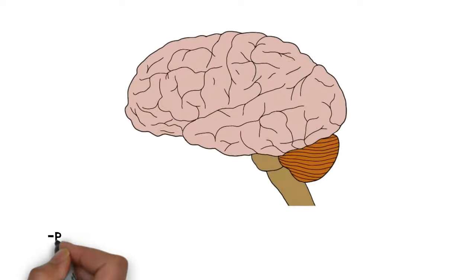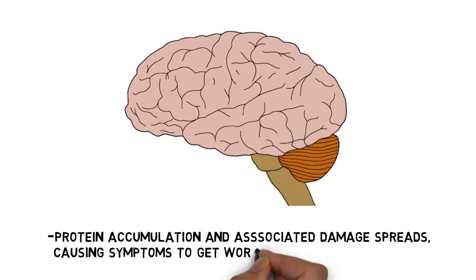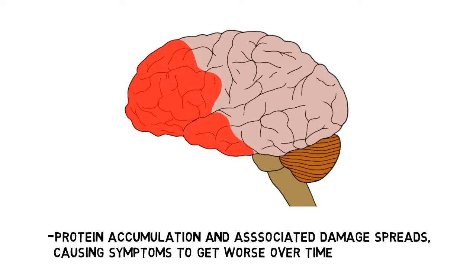The protein accumulation and associated damage spreads, causing the symptoms of FTD to get progressively worse over time. While initially a patient may display symptoms linked to just one of the FTD subtypes, the spreading neurodegeneration may eventually lead to the manifestation of symptoms from multiple subtypes.